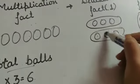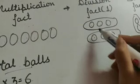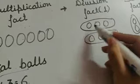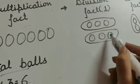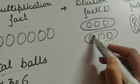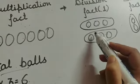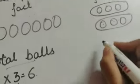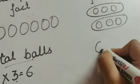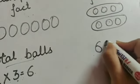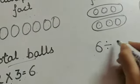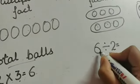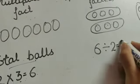6 balls divided into 2 groups: 1, 2, 3 in one group and 1, 2, 3 in another group. So each group has 3 balls. So, 6 divided by 2 is equals to 3.